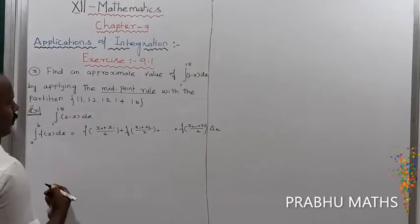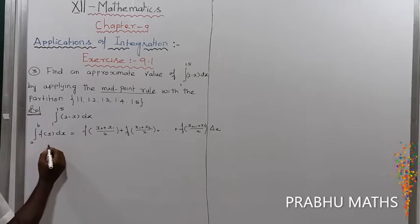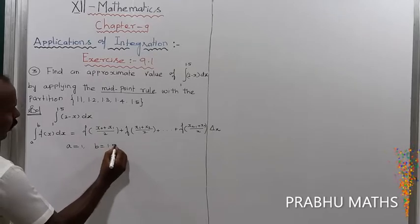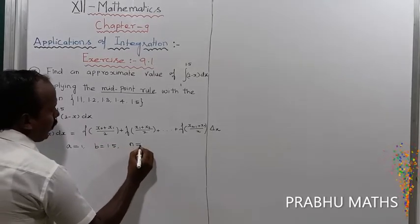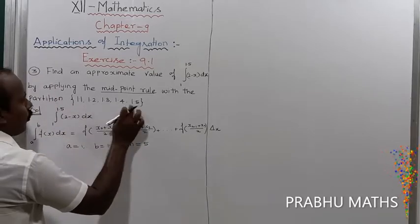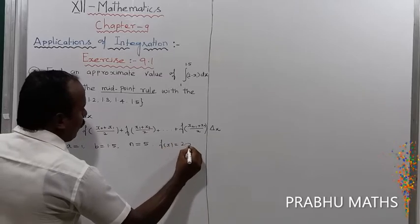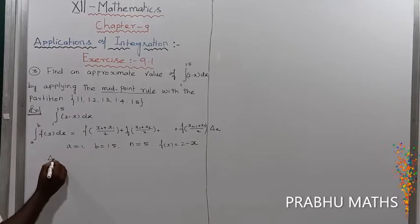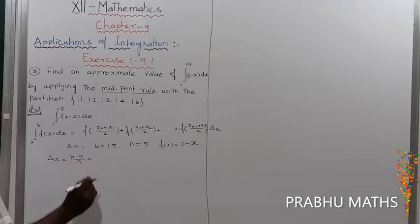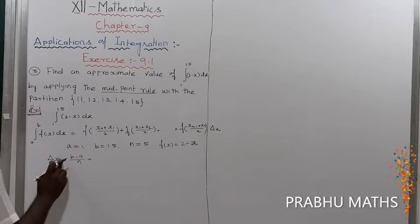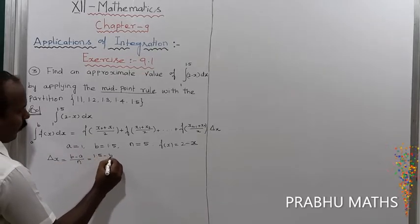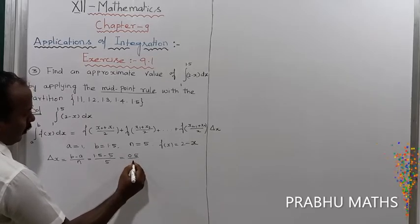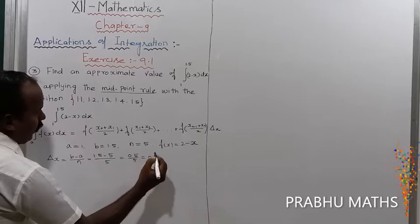First, find the value of delta x. Here a equals 1 (lower limit), b equals 1.5 (upper limit). The total number of partitions n equals 5. f(x) equals 2 minus x. So delta x equals (b minus a) divided by n, which is (1.5 minus 1) divided by 5, equals 0.5 divided by 5, equals 0.1.